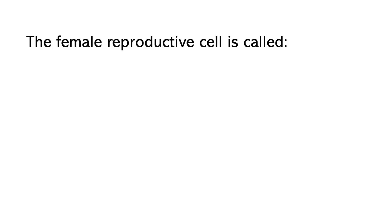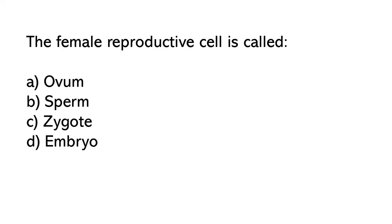The female reproductive cell is called: A) Ovum, B) Sperm, C) Zygote, D) Embryo. So the correct answer is option A. The female reproductive cell is called ovum.